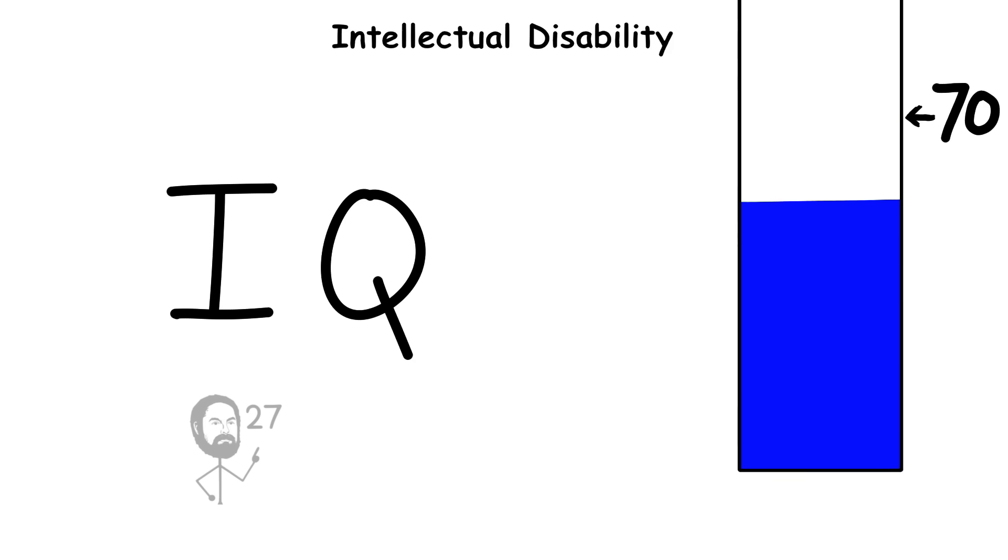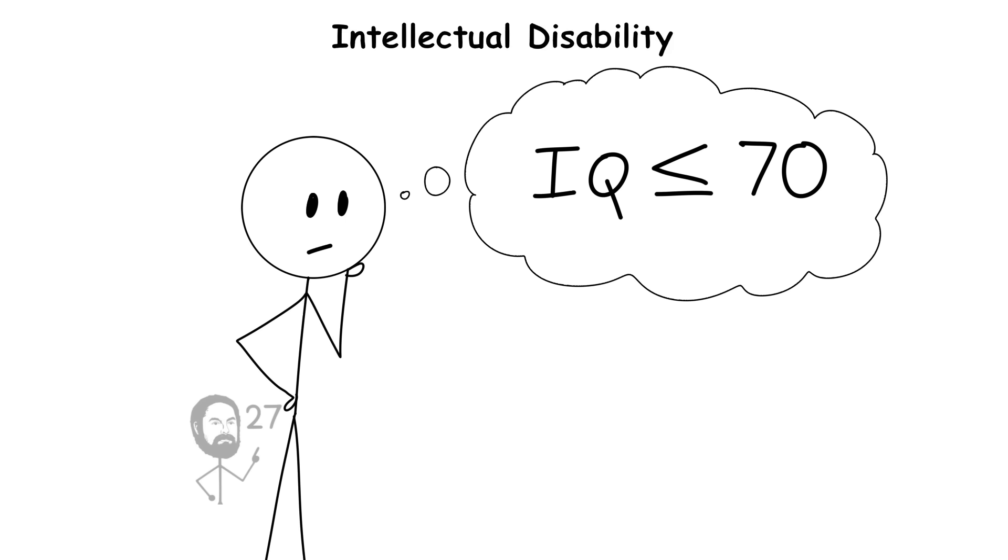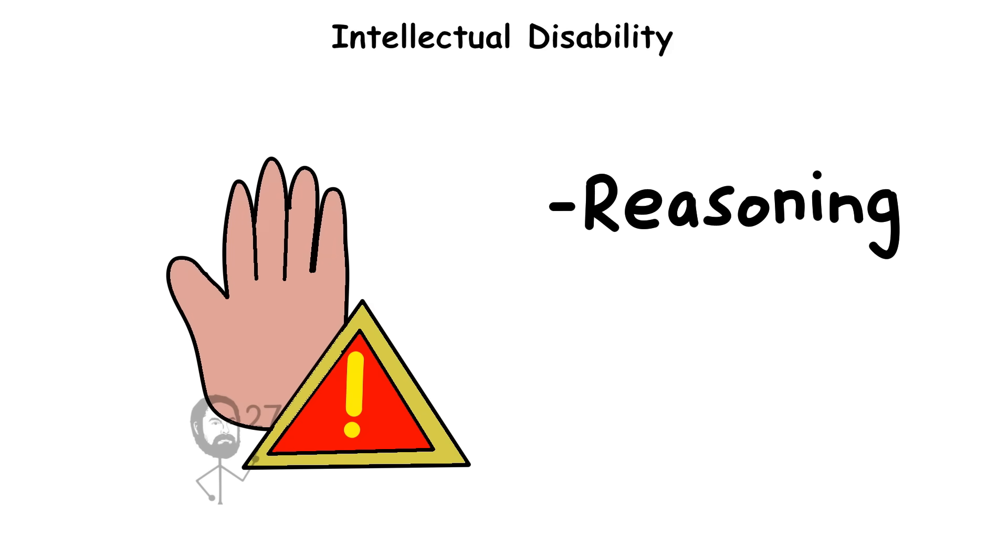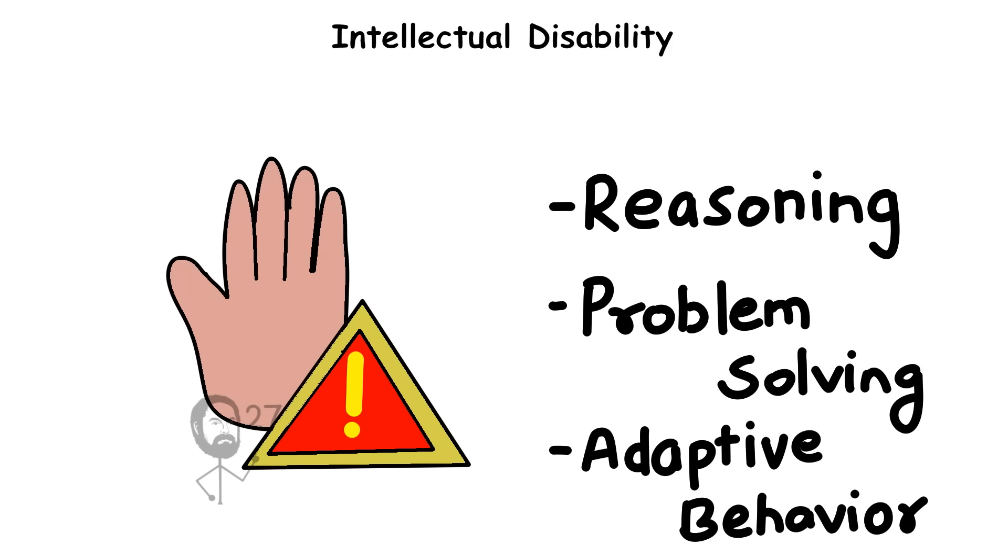Intellectual Disability. IQ less than or equal to 70. An IQ at or below 70 typically indicates severe limitations in reasoning, problem-solving, and adaptive behavior.